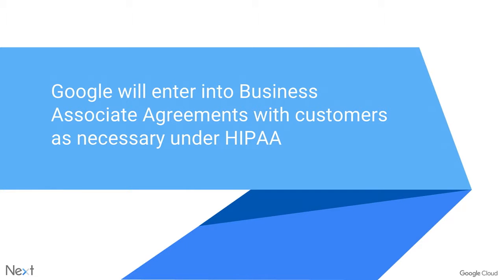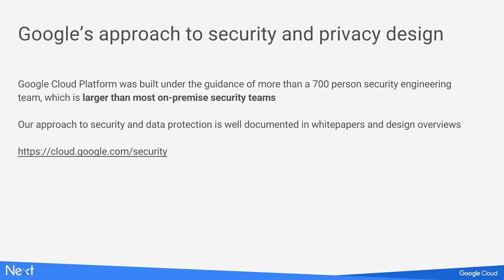Google will enter into a business associate agreement with customers as necessary under HIPAA. So if you're a hospital system, you're the covered entity, Google's the business associate, and we will sign that agreement so that you can bring protected health information to the cloud. We're able to sign this because of our approach to security and privacy design. The Cloud Platform was built under the guidance of an engineering team of more than 700 security engineers — larger than what most people can have on premise. Our approach to security, privacy, and data protection is well documented in a number of white papers and design overviews available on our security page.